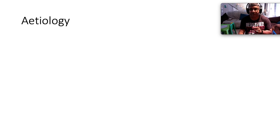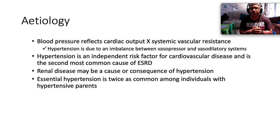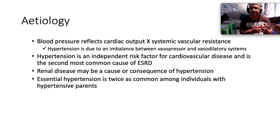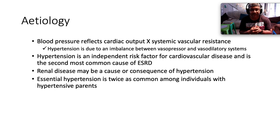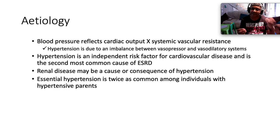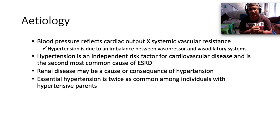In terms of etiology, blood pressure reflects cardiac output times systemic vascular resistance, and cardiac output is constituted by heart rate and stroke volume. Hypertension is largely due to an imbalance between vasopressor and vasodilatory systems. It is an independent risk factor for cardiovascular disease and the second most common cause of end-stage renal disease — number one being diabetes mellitus. Renal disease can be both a cause and a consequence of hypertension.